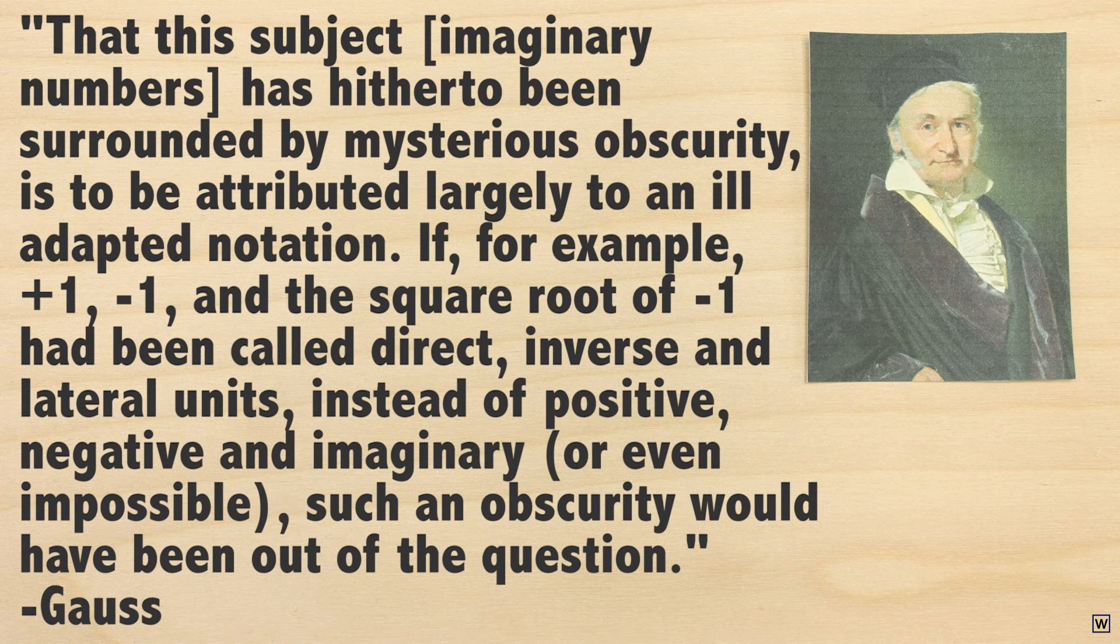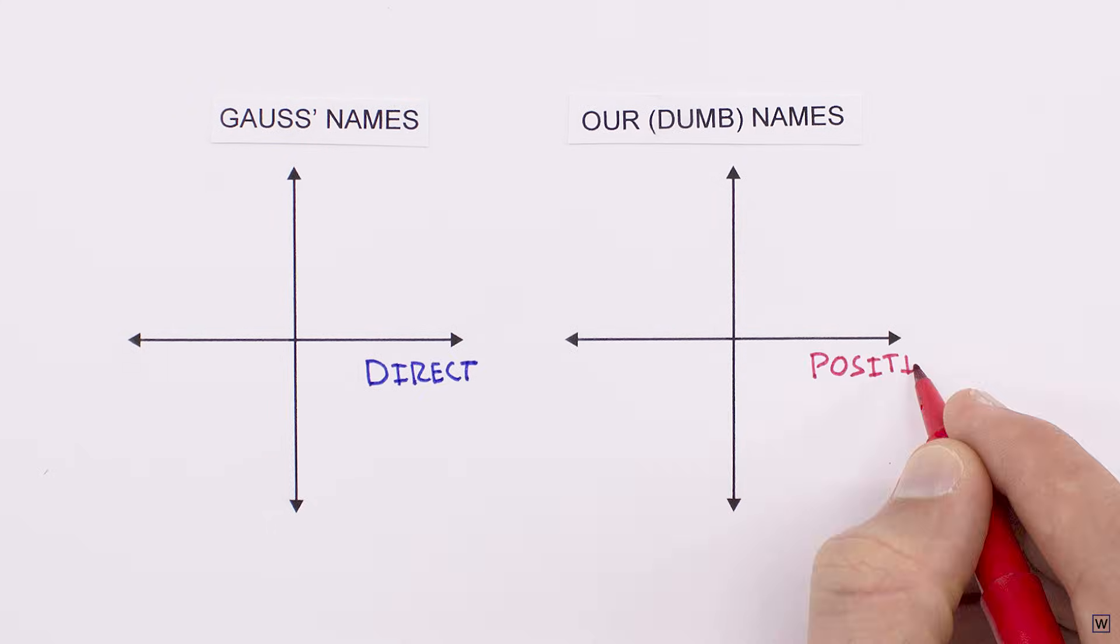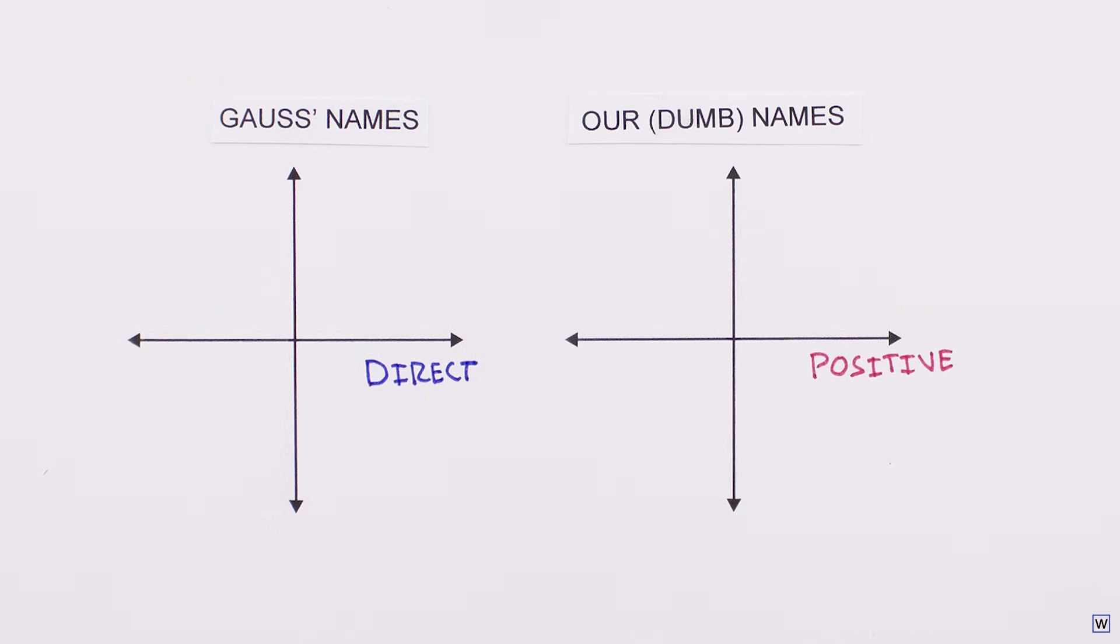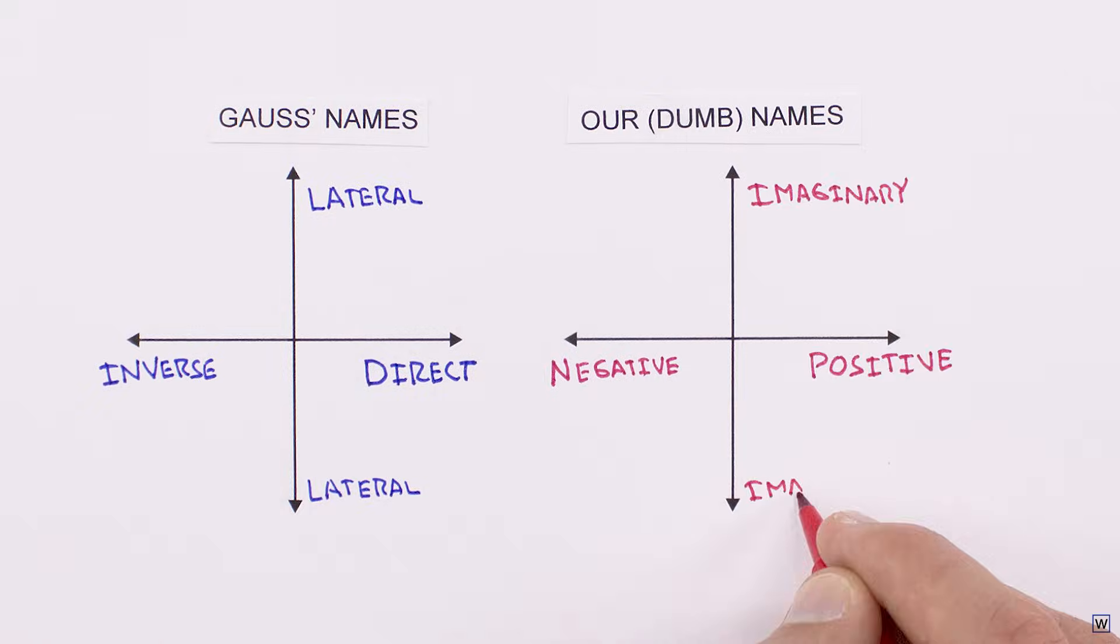This arrangement is why Gauss preferred the term lateral over imaginary and inverse instead of negative. Gauss suggested that we should call the numbers to the right of the origin direct, the numbers to the left inverse, and the numbers above and below lateral.